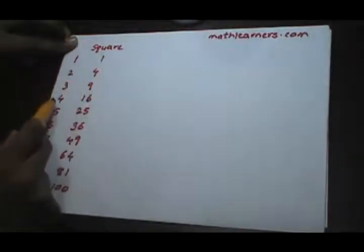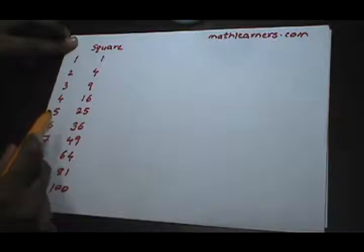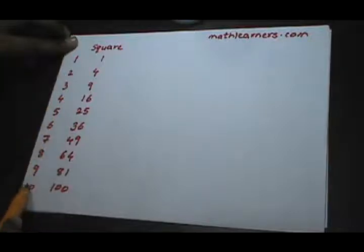1 squared is 1, 2 squared is 4, 3 squared is 9, 4 squared is 16, and so on till 10 squared is 100.